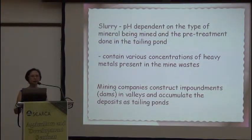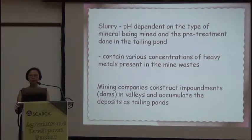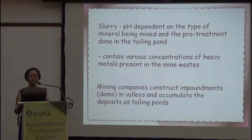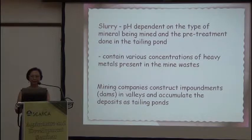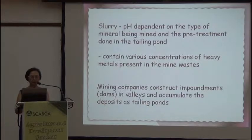The slurry produced can have a very acidic or alkaline pH, depending on the type of minerals mined, and it is treated in a tailing pond. The most difficult and environmentally degrading part is that these mine tailings are rich in heavy metals. Some mine tailings have a mixture of heavy metals; in this particular study, copper is the toxic heavy metal occurring in large quantities.